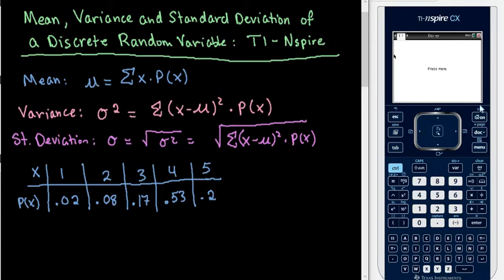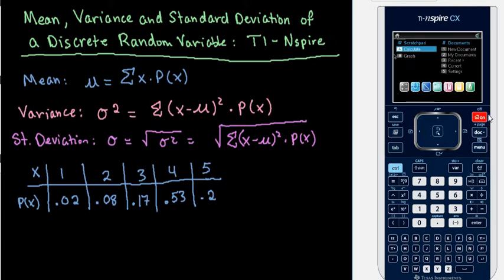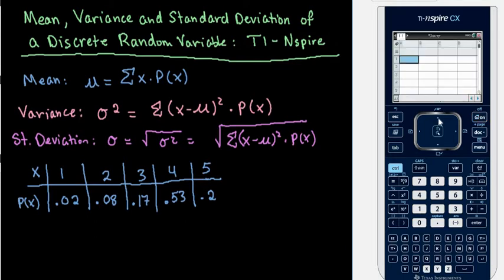The first thing that we want to do is, you can start from the home screen, start with a new document. That's up to you, but we're going to use a spreadsheet. In the spreadsheet, we're going to name our variables, so I'm just going to use X for the first one. Then I would put in my values 1, 2, 3, 4, and 5.